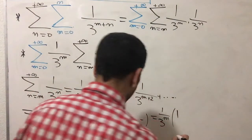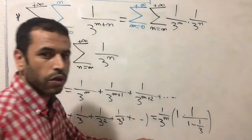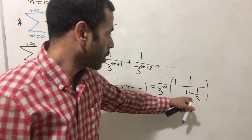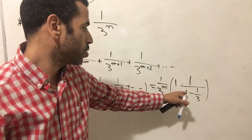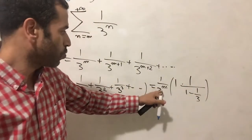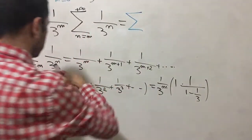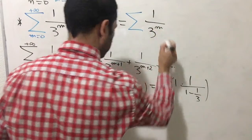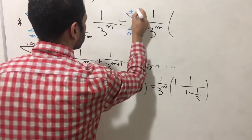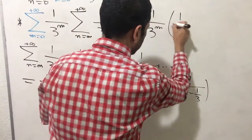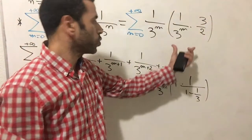Factoring out 1 over 3 to the m from the inner sum, we get 1 over 3 to the m times the quantity (1 plus 1/3 plus 1/9 and so on). This inner part is a geometric series with first term 1 and ratio 1/3, giving 1 over (1 minus 1/3) equals 3/2. So the inner sum equals 3/2 times 1 over 3 to the m.